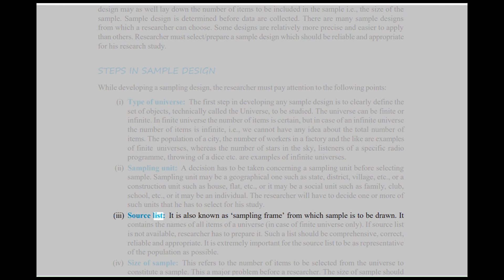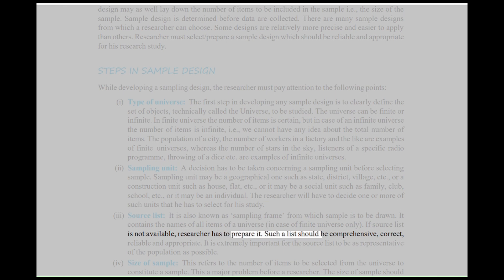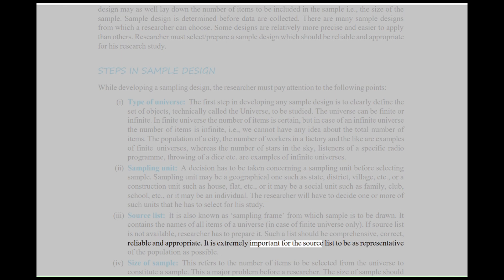Third, Source List: It is also known as the sampling frame from which the sample is to be drawn. It contains the names of all items of a universe, in case of finite universe only. If a source list is not available, the researcher has to prepare it. Such a list should be comprehensive, correct, reliable, and appropriate. It is extremely important for the source list to be as representative of the population as possible.